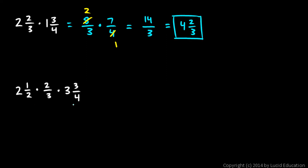And one more, this one involves three numbers being multiplied, but the technique is the same. We make sure all of these are fractions, so I need to change these two. 2 times 2 is 4, plus 1 is 5, 5 halves, times, the 2 thirds stays just like it is, and then 3 and 3 fourths. 3 times 4 is 12, plus 3 is 15, over 4.